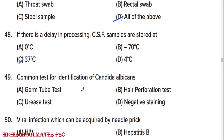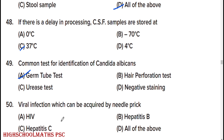If there is a delay in processing CSF, samples are stored at 37 degrees Celsius. Common test for identification of Candida albicans is option A: germ tube test. Viral infections which can be acquired by needle prick: all of the above — HIV, Hepatitis C, and Hepatitis B.